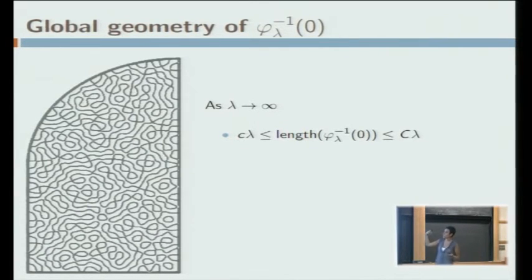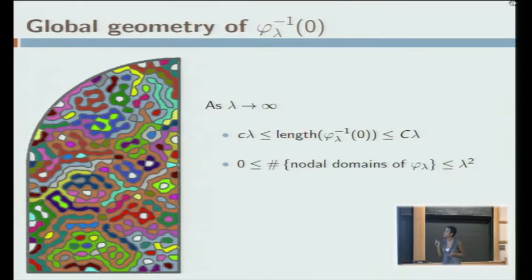Aside from the length, you could ask how many connected components this zero set is defining. In this next picture, you're seeing each connected component shown with a different color and you're just trying to count how many of them there are. This result is known as Courant's nodal domain theorem. The number of nodal domains for phi lambda is bounded above by lambda squared. In full generality, you cannot hope to have a lower bound for this number.